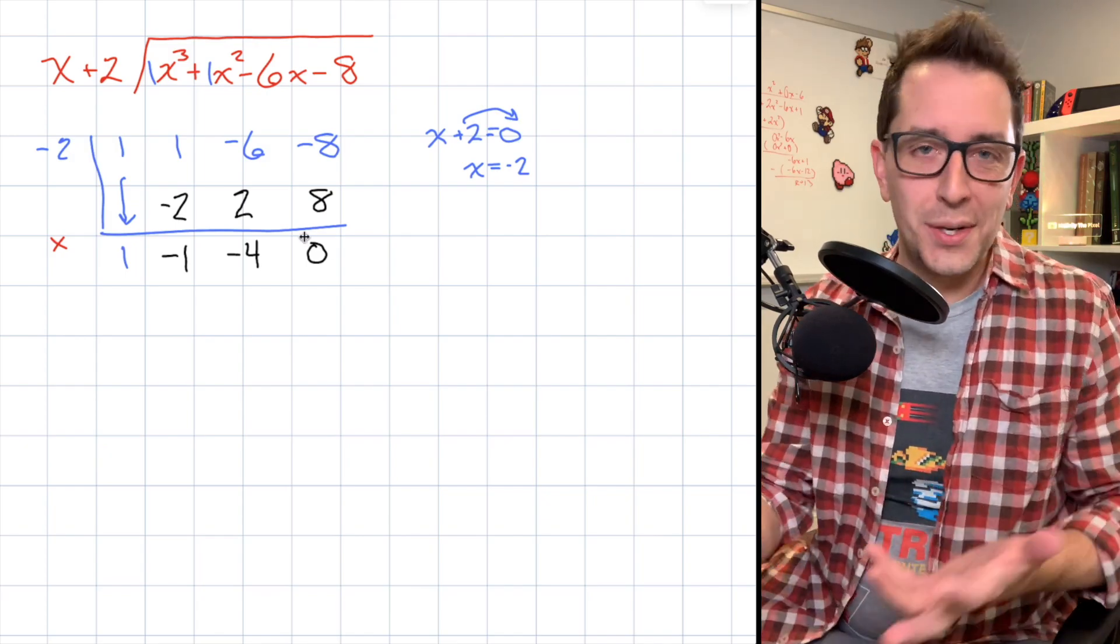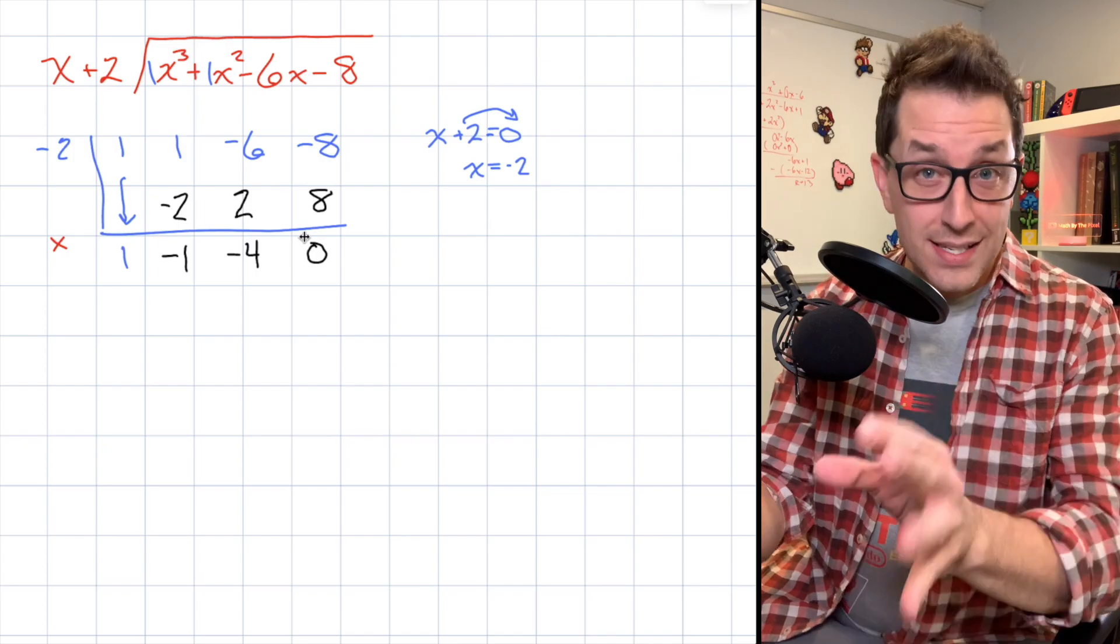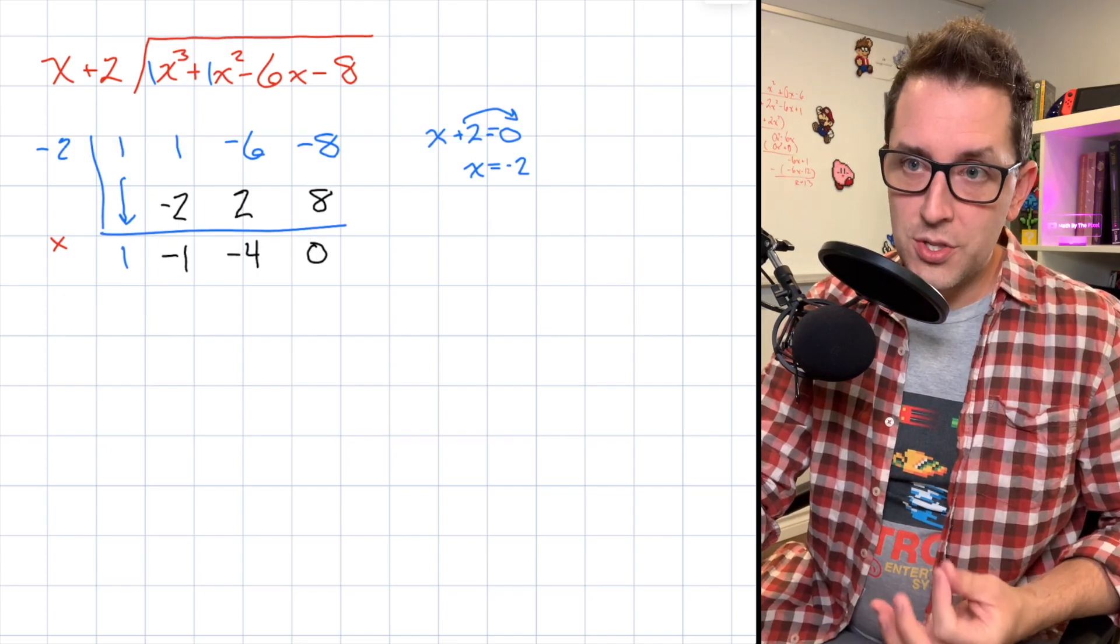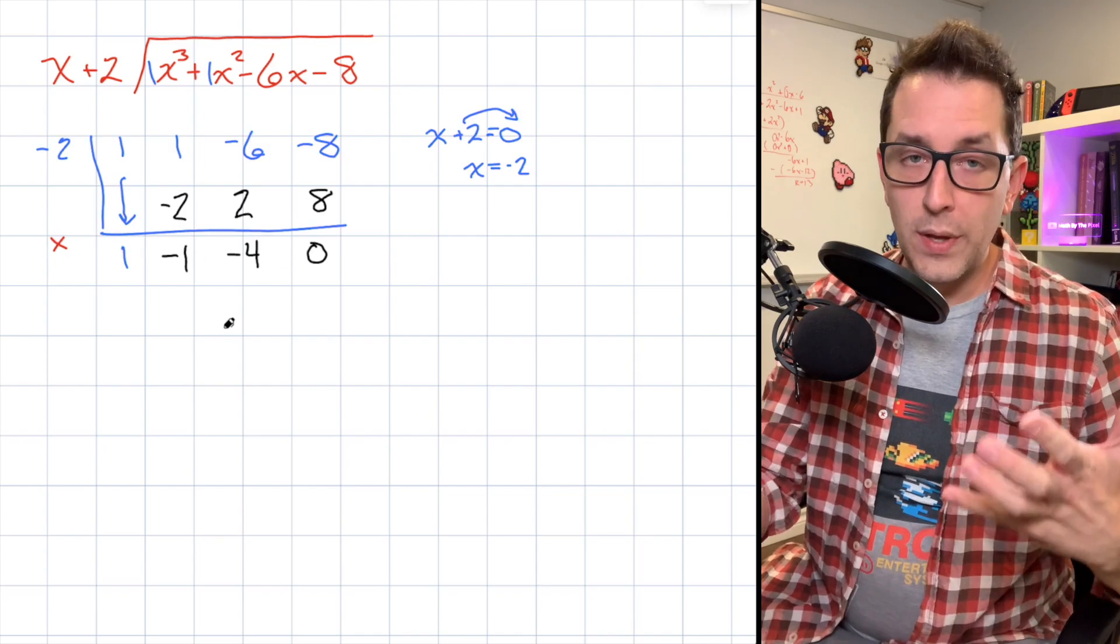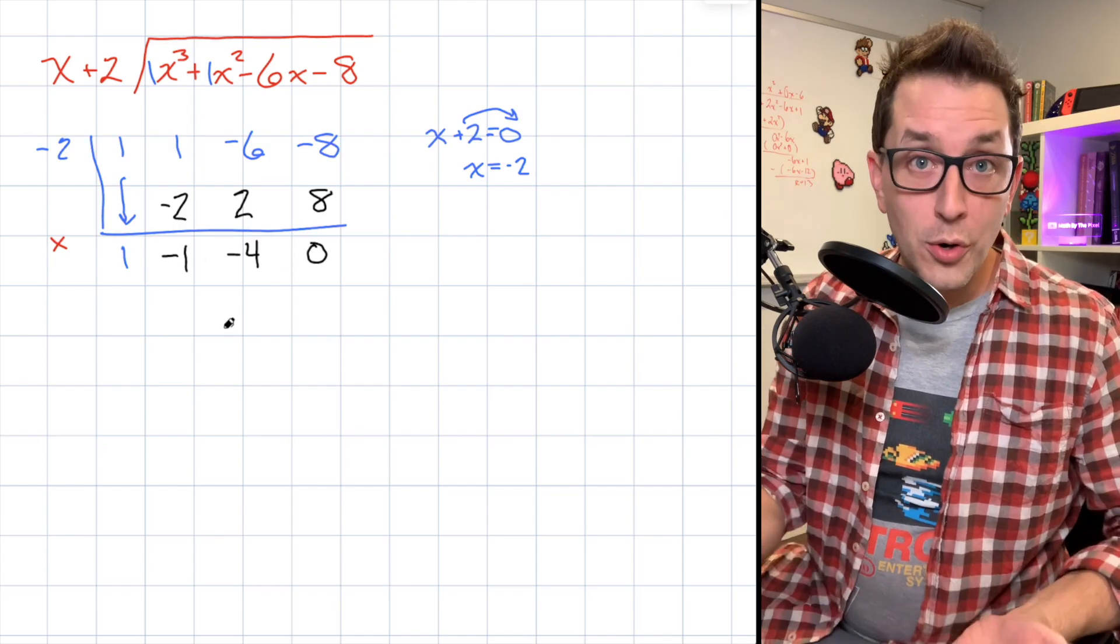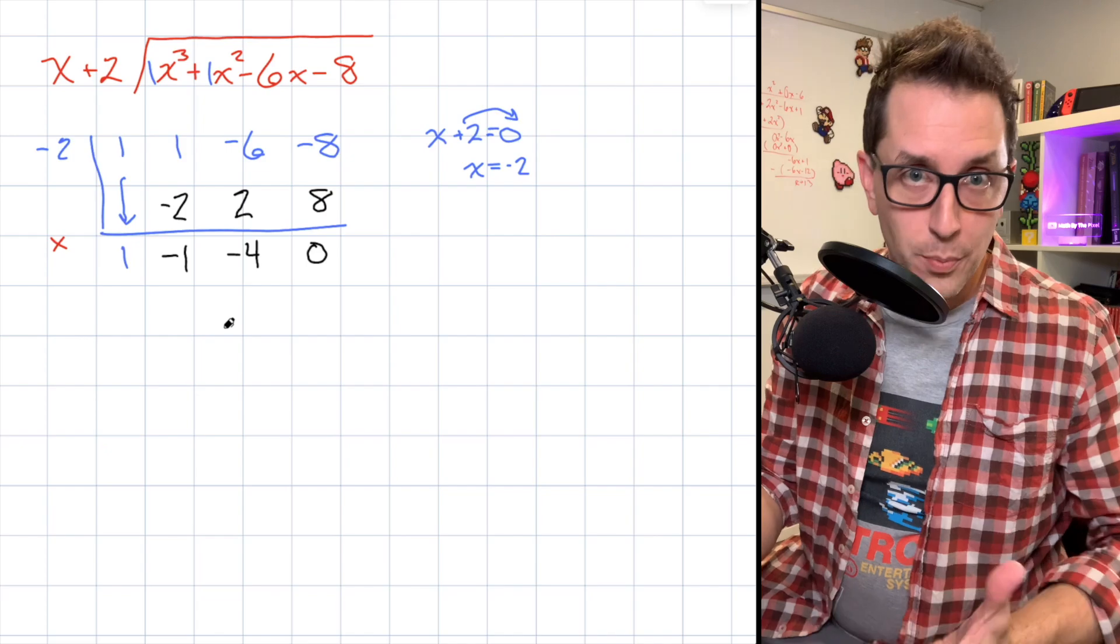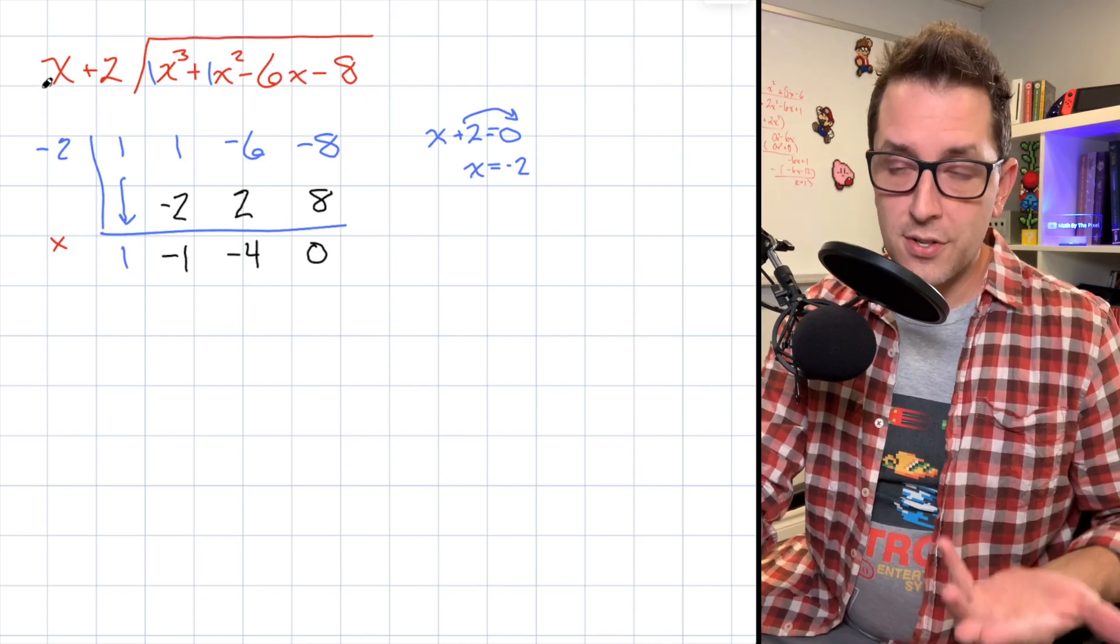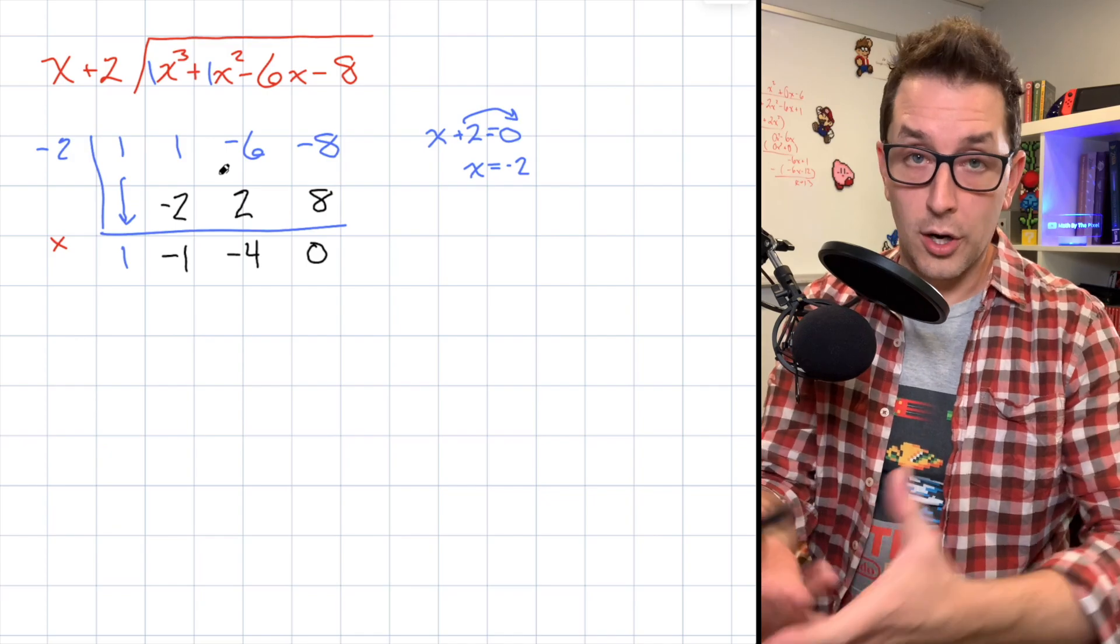Now, what have we done here? We've just created a bunch of random numbers. I promise these numbers hold a lot more significance than you might think. As it turns out, each one of these numbers is going to be a coefficient in our quotient, which is the result of our division problem. We took our dividend of this polynomial, divided it by our divisor of x+2, and we end up with our quotient.